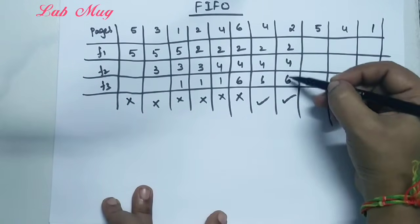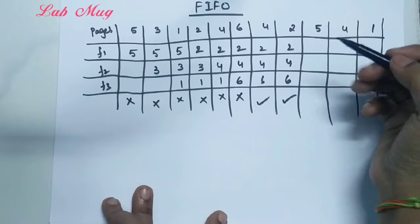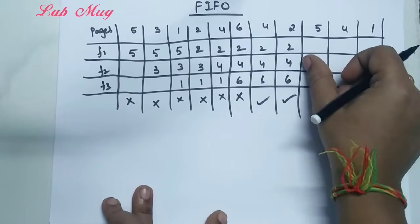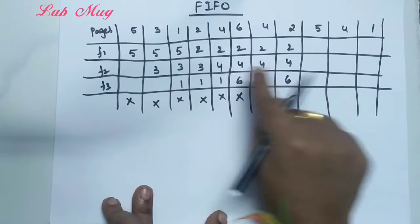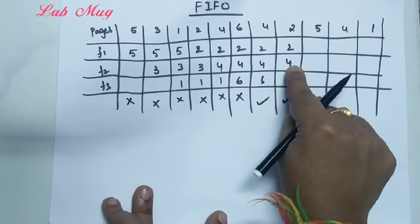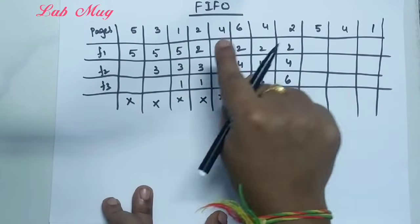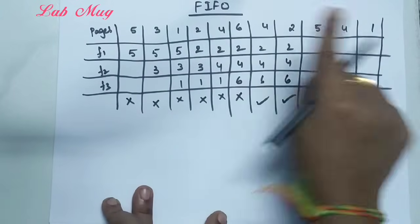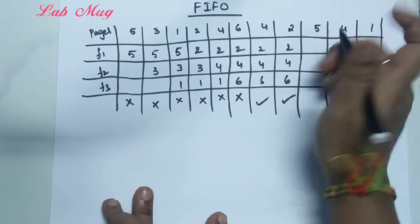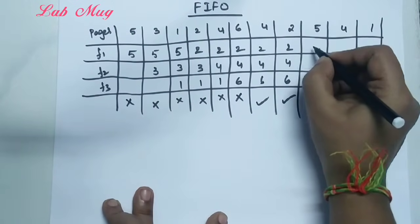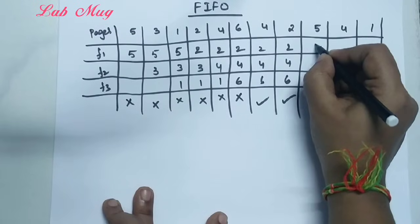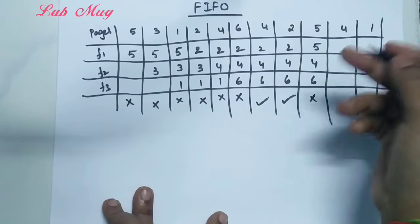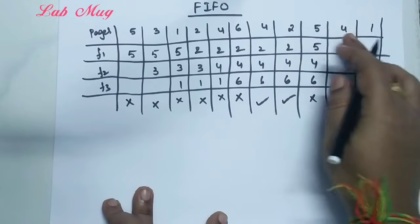Next is page 5. Page 5 is not in main memory, so we need to do a page replacement. Using First In First Out, we track which was inserted earliest — page 2 was inserted first among the current set, so page 2 is replaced with page 5. Now frames contain 5, 4, and 6. That is also a page fault.